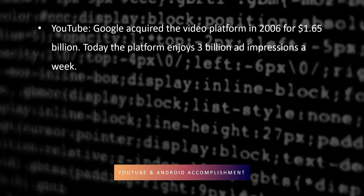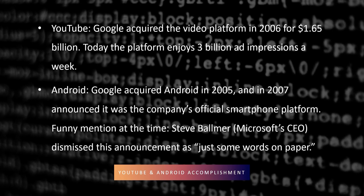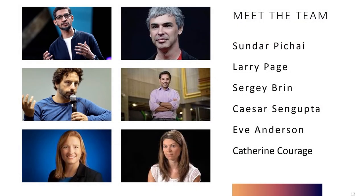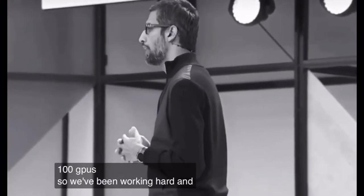Moving on to YouTube and Android accomplishments: Google acquired the video platform YouTube in 2006 for 1.65 billion dollars — today the platform enjoys 3 billion ad impressions per week. Google acquired Android in 2005 and in 2007 announced it as the company's official smartphone platform. Google's main team members to date include Sundar Pichai, Larry Page, Sergey Brin, Caesar Sengupta, Eve Anderson, and Catherine Courage.